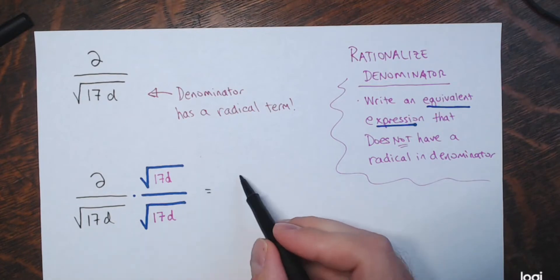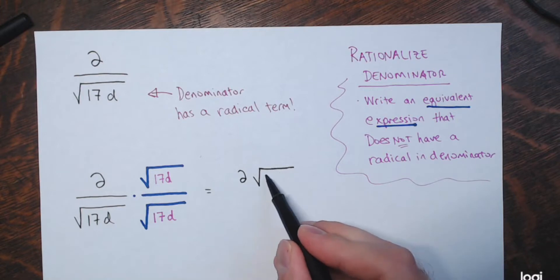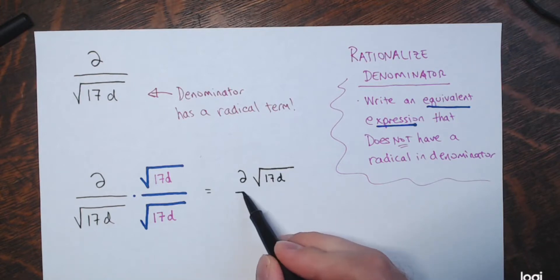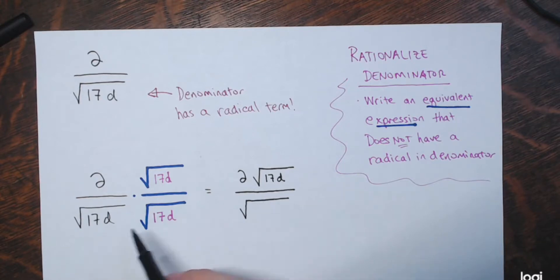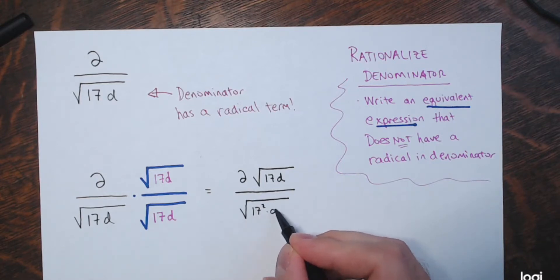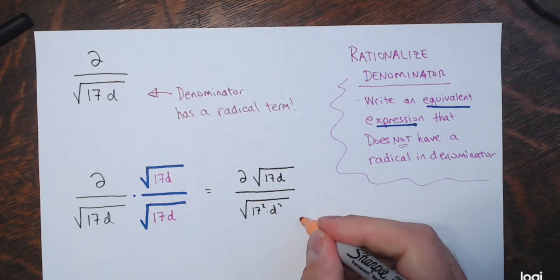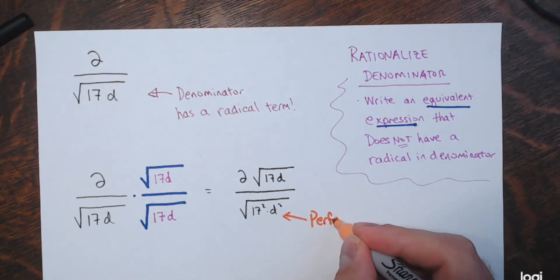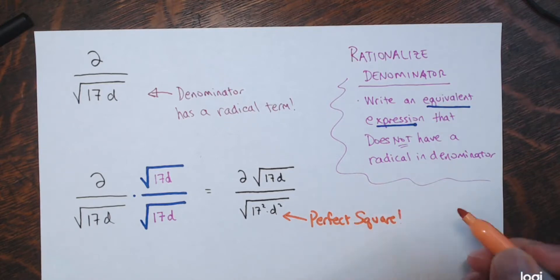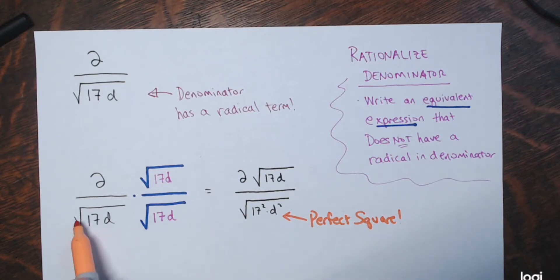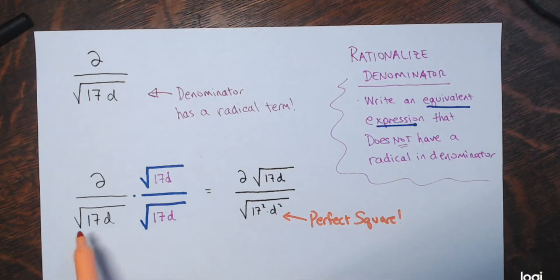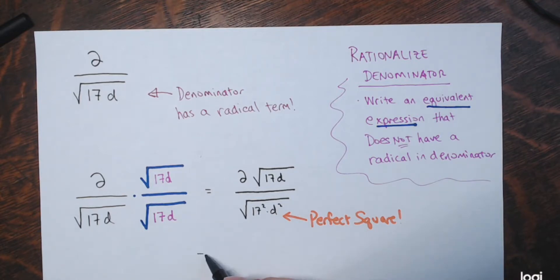Now in the numerator I have 2 times the square root of 17d, divided by the square root of 17 squared times d squared. I now have perfect squares in the radicand of the denominator. Be careful — I'm doing square roots here, so I want perfect squares. If this were a cube root, I'd want perfect cubes. If this were a fourth root, I'd want perfect fourth powers. So just pay attention to what kind of root you're taking.